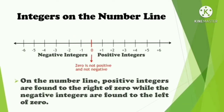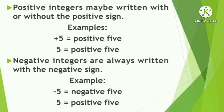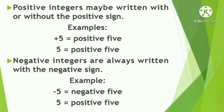On the number line, positive integers are found to the right of zero, while the negative integers are found to the left of zero. Positive integers may be written with or without the positive sign. For example, a number 5 with a plus sign is read as positive 5, and the number 5 without the plus sign is also read as positive 5. Negative integers are always written with the negative sign. For example, the number 5 with a minus sign is read as negative 5.